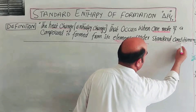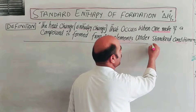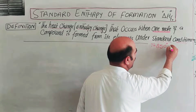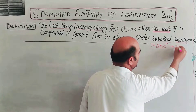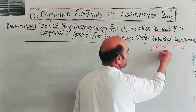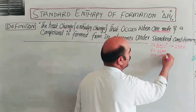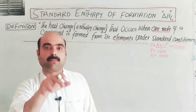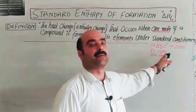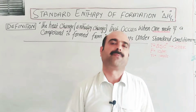The standard conditions are: temperature 25 degrees C or 298 Kelvin, standard pressure 1 atm, and standard moles 1 mole. When 1 mole of a compound is formed from its elements under these standard conditions of temperature and pressure, the enthalpy change is called the standard enthalpy of formation.